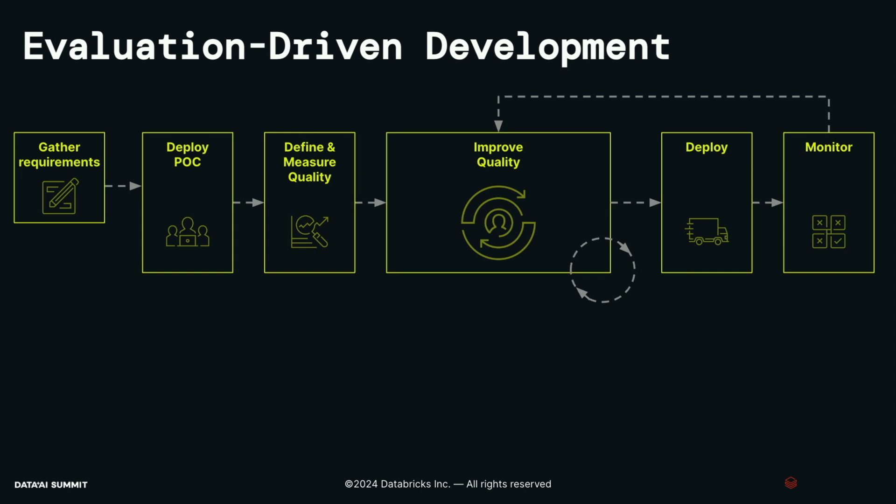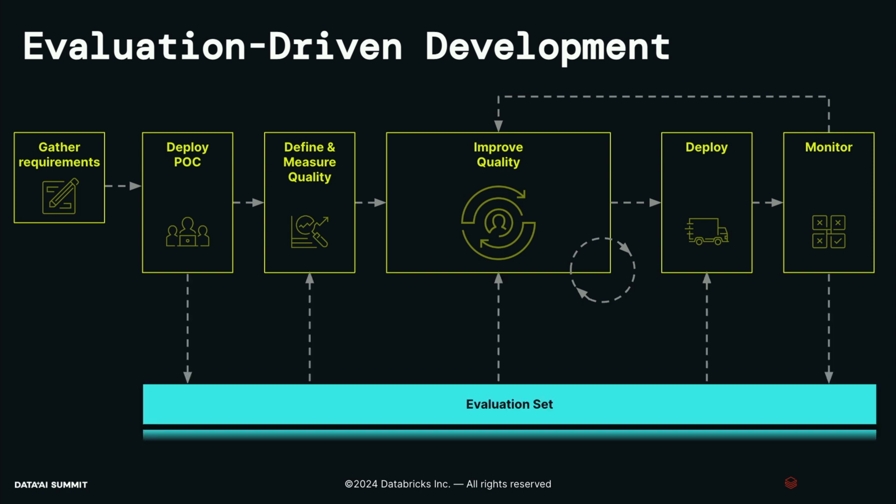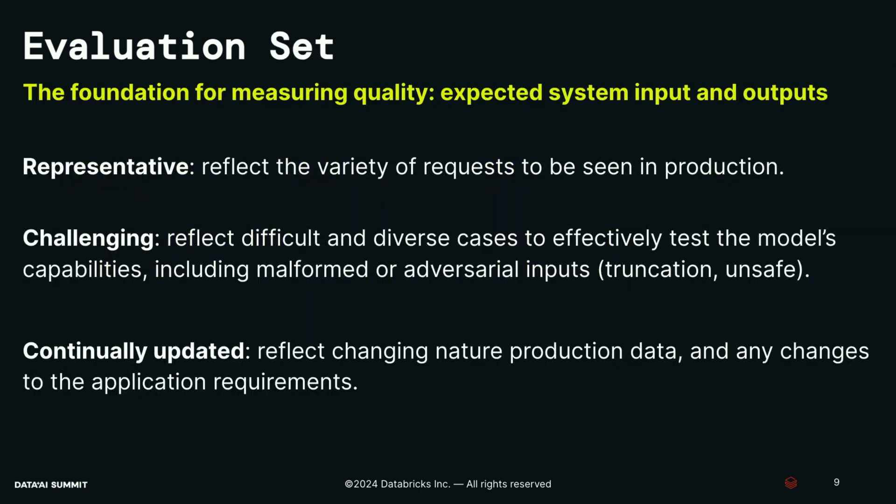The way we recommend customers think about this — what we've implemented in Mosaic AI agent evaluation — is what we call evaluation-driven development. The basic idea is you gather your requirements, build that POC, but then key components become defining and measuring quality: what does quality actually mean and how do you measure it? Beneath all of this is the evaluation set, which is a critical component. You need metrics and a dataset on which you can measure those particular metrics for quality.